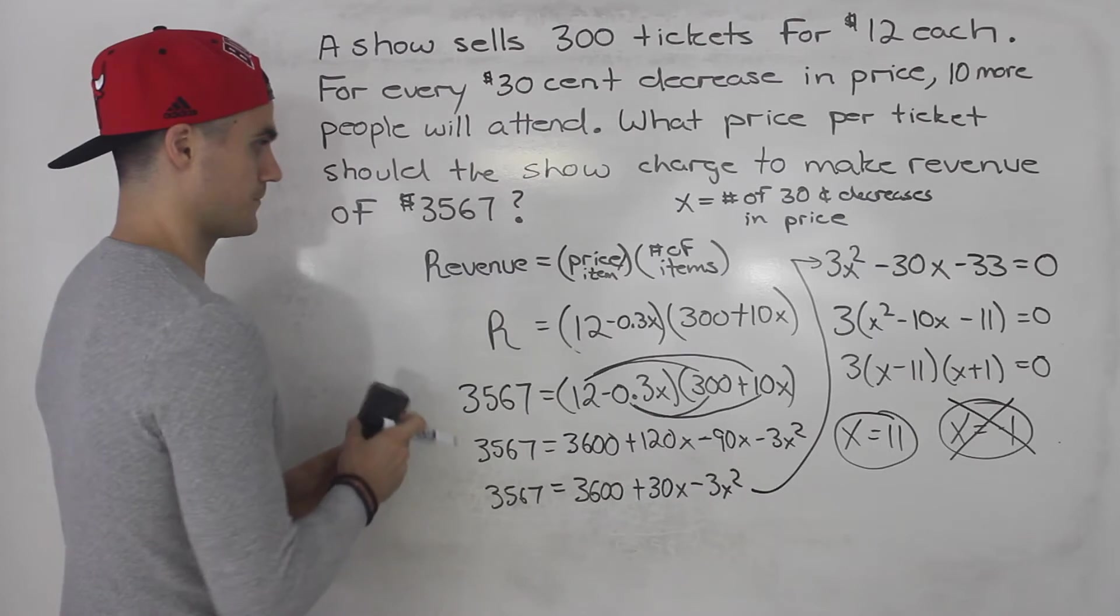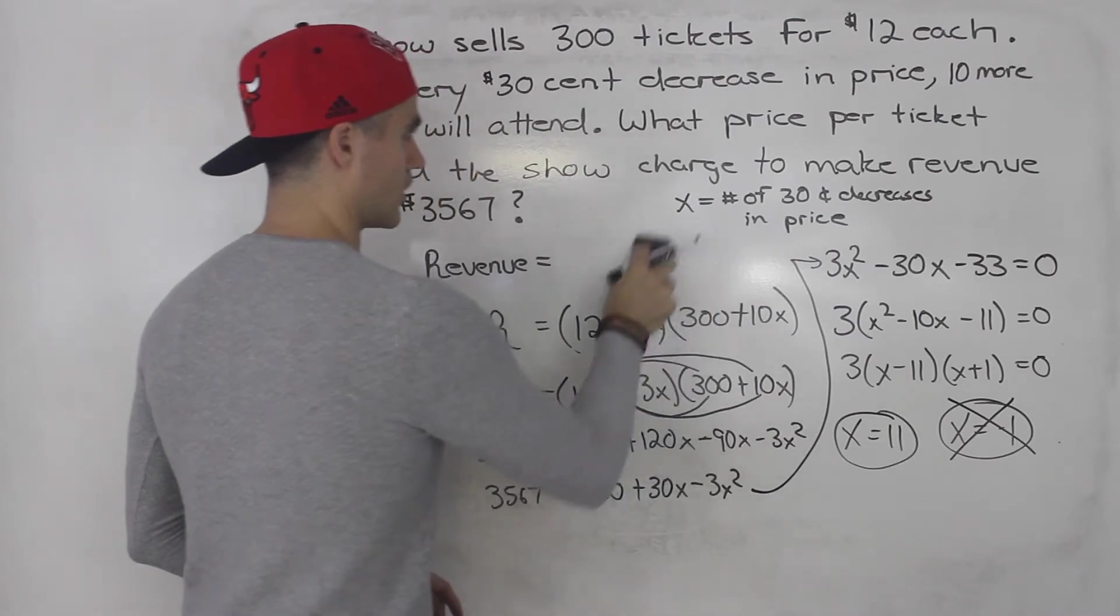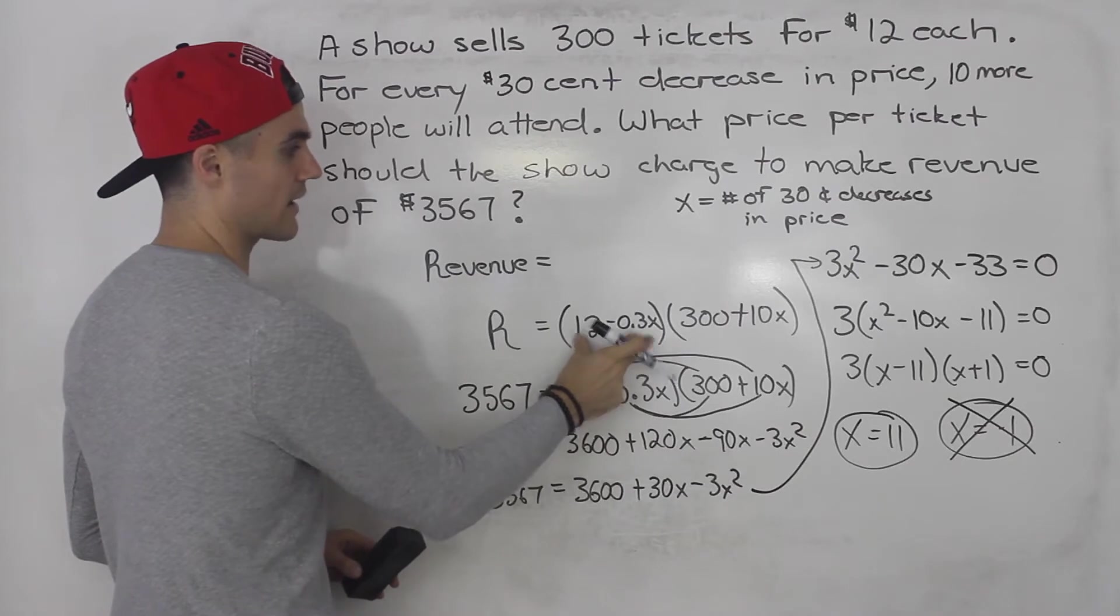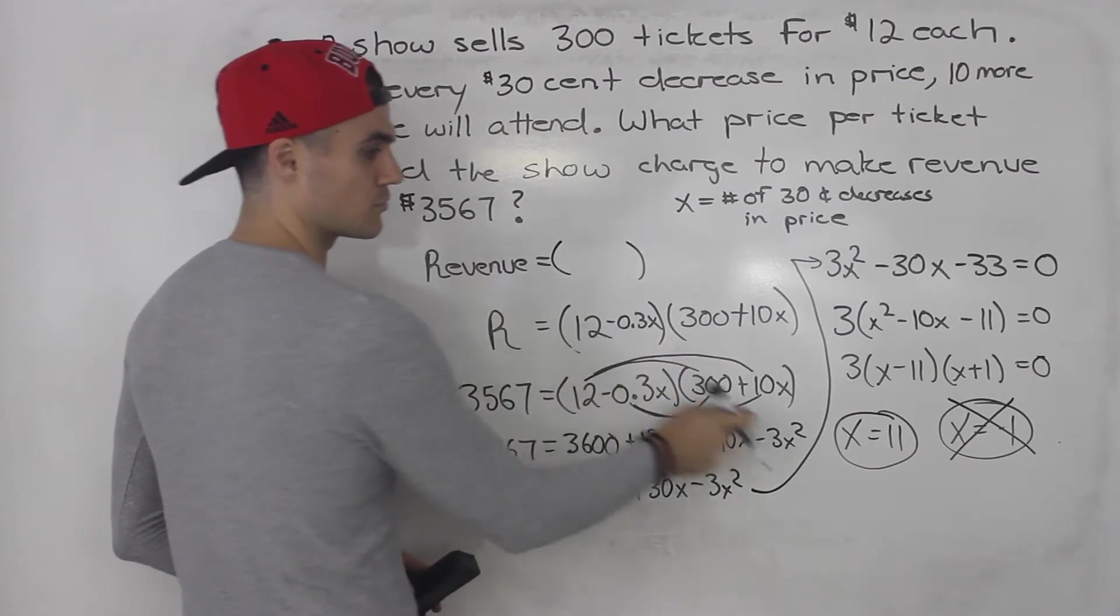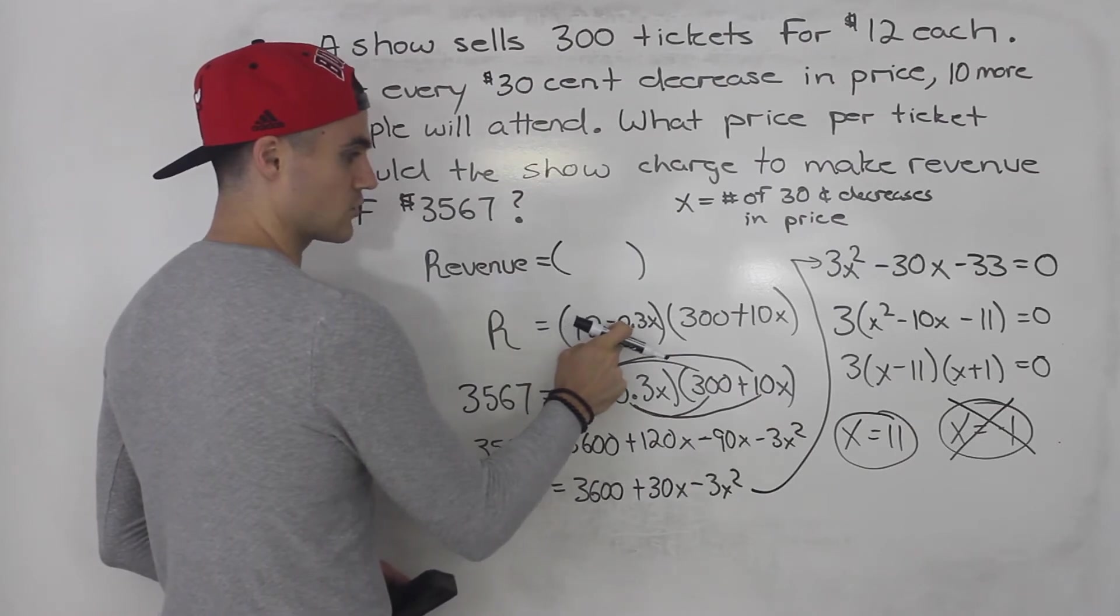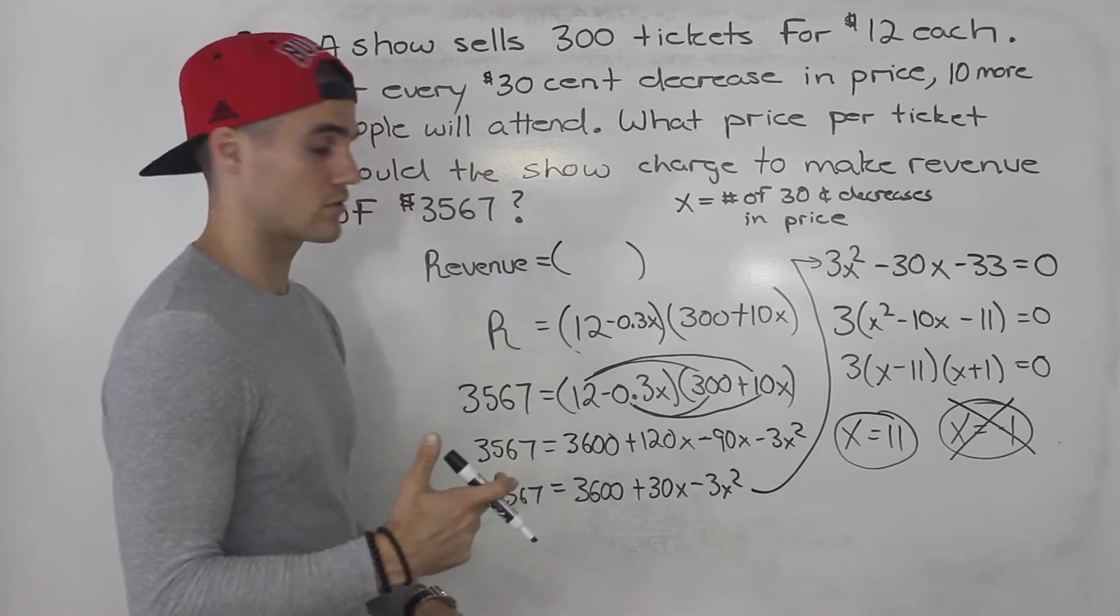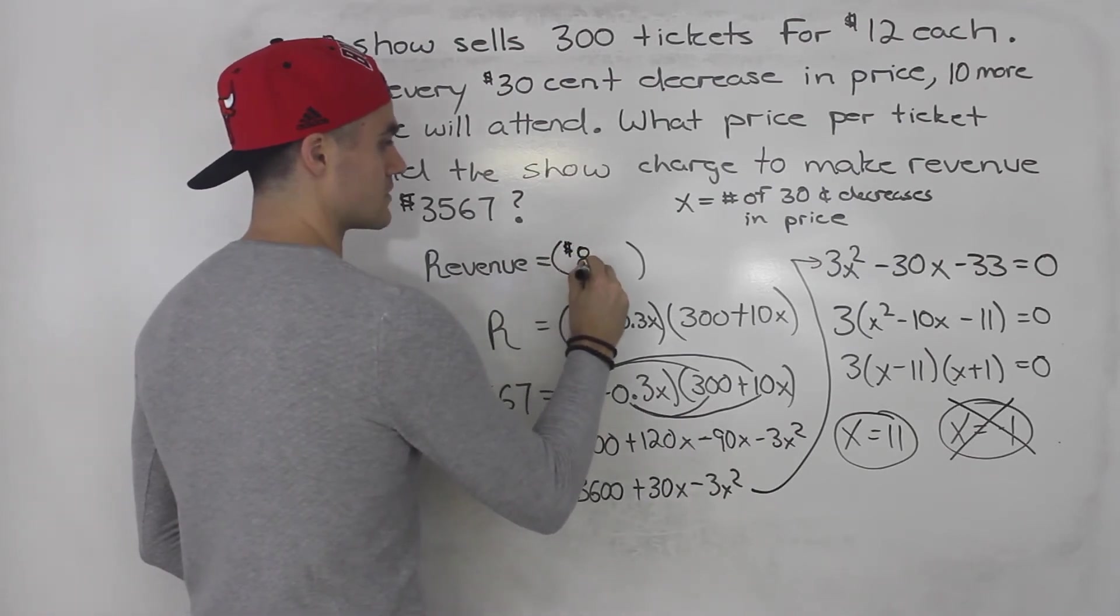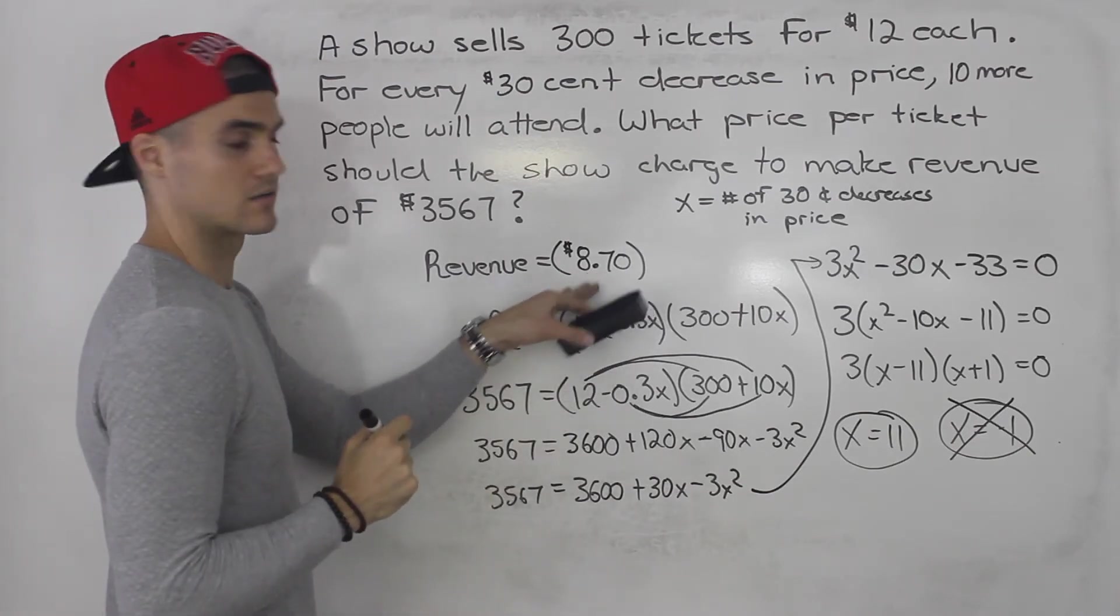The question is asking us what price per ticket should the show charge. And this bracket is the price per ticket bracket. So we would plug in this x value of 11 into this bracket. So 12 minus 0.3 times 11, that's like 12 minus $3.30, which is $8.70. So that's the price per ticket that should be charged.